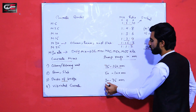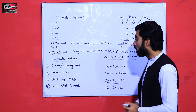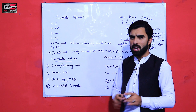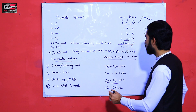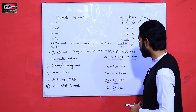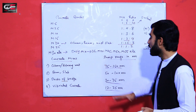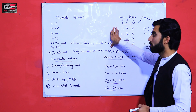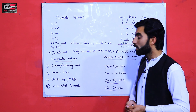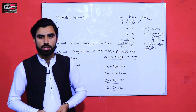For the deck of a bridge — meaning the slab of a bridge — the slump range is 30 to 75 mm. For vibrated concrete, if you are using a vibrator on any structure, the slump should be 12 to 25 mm.